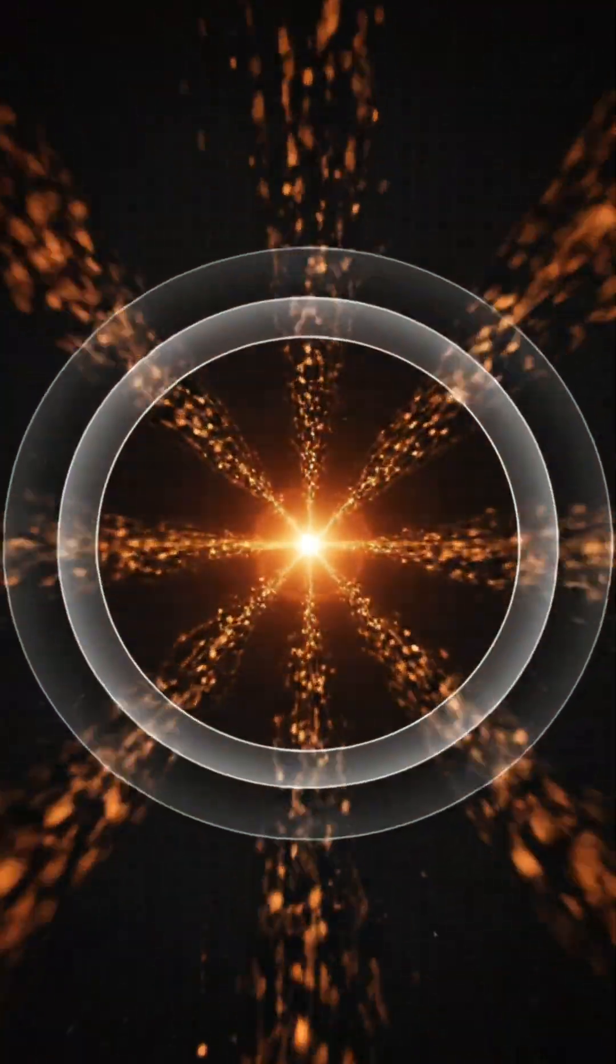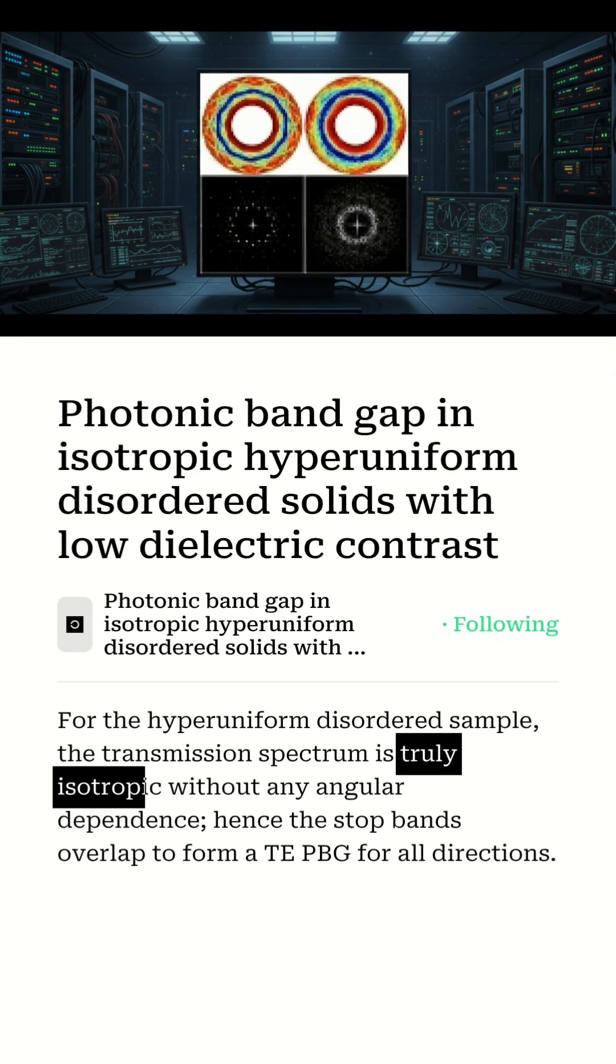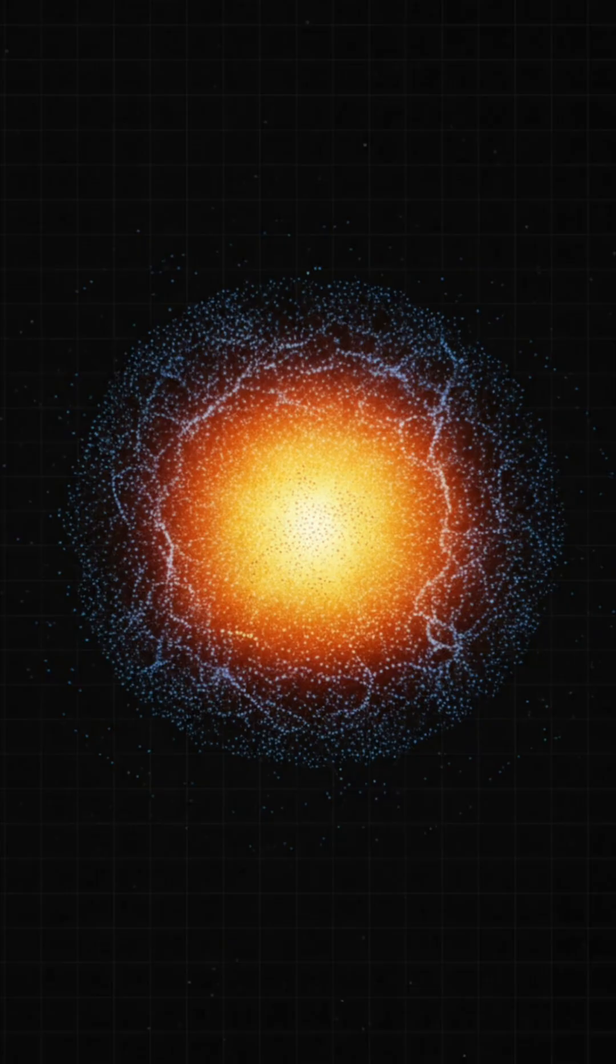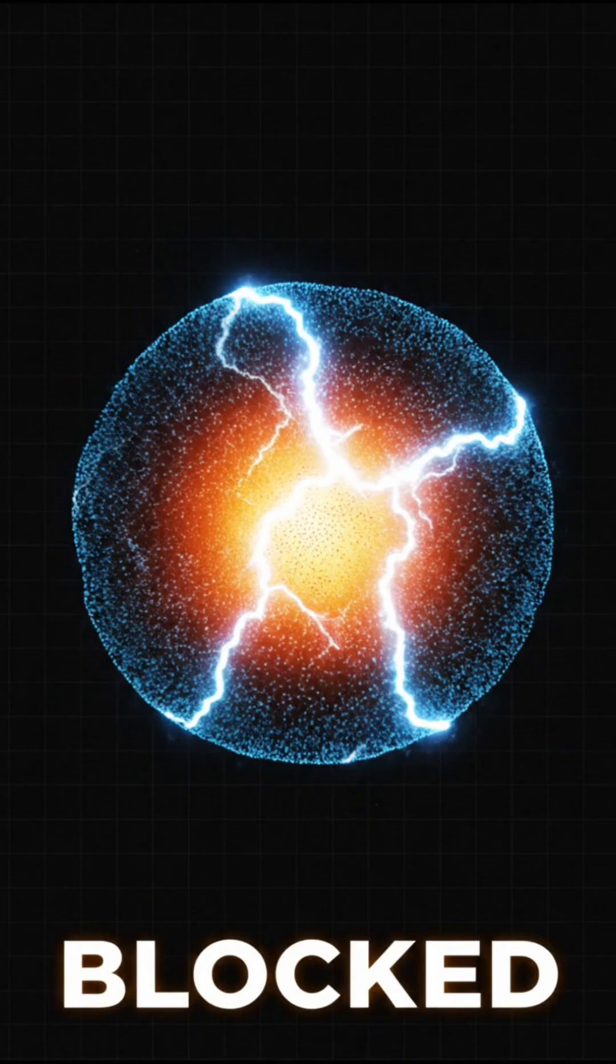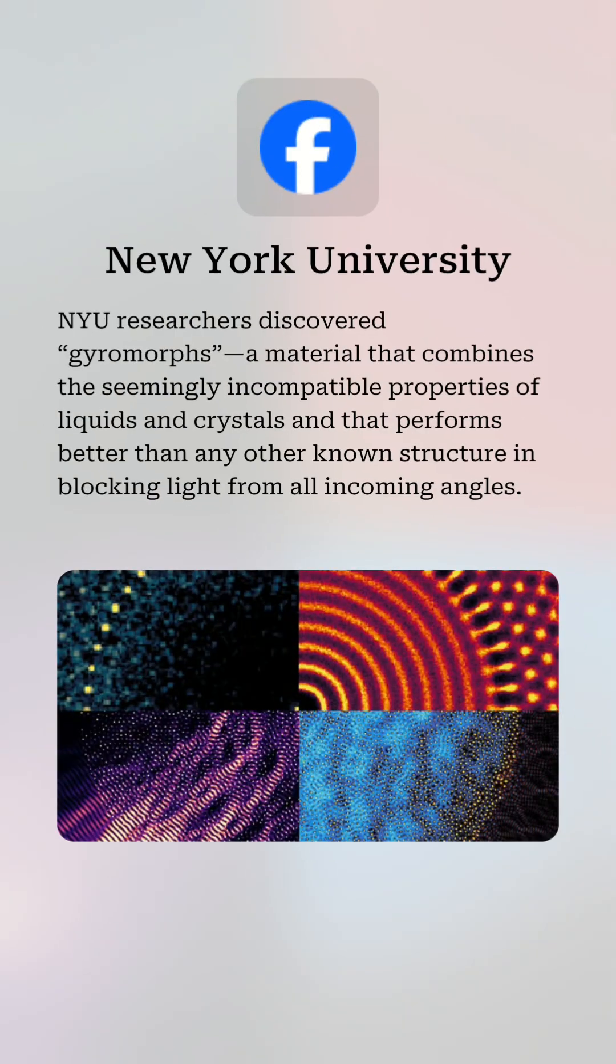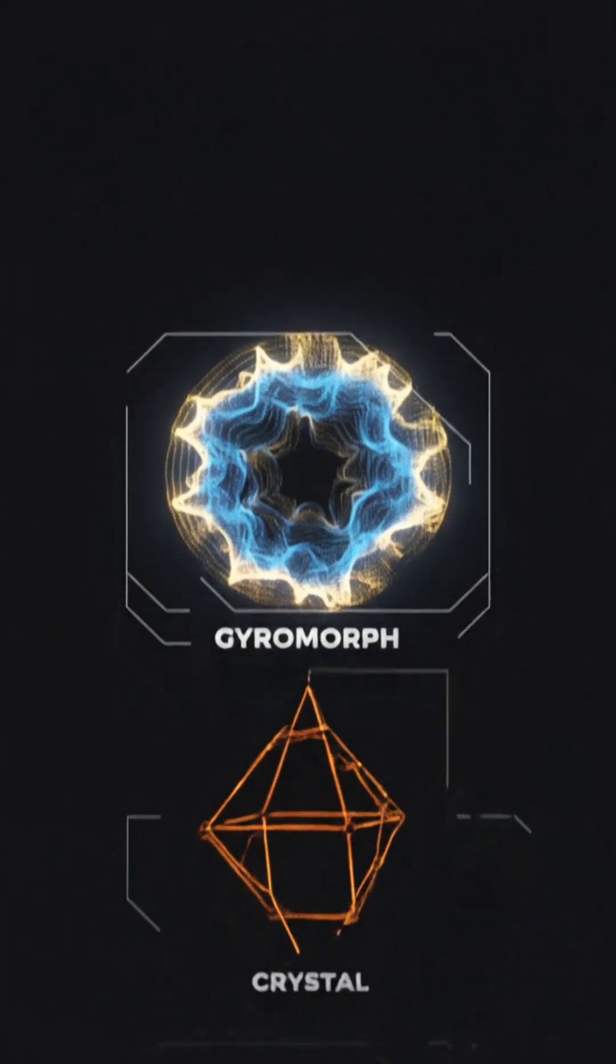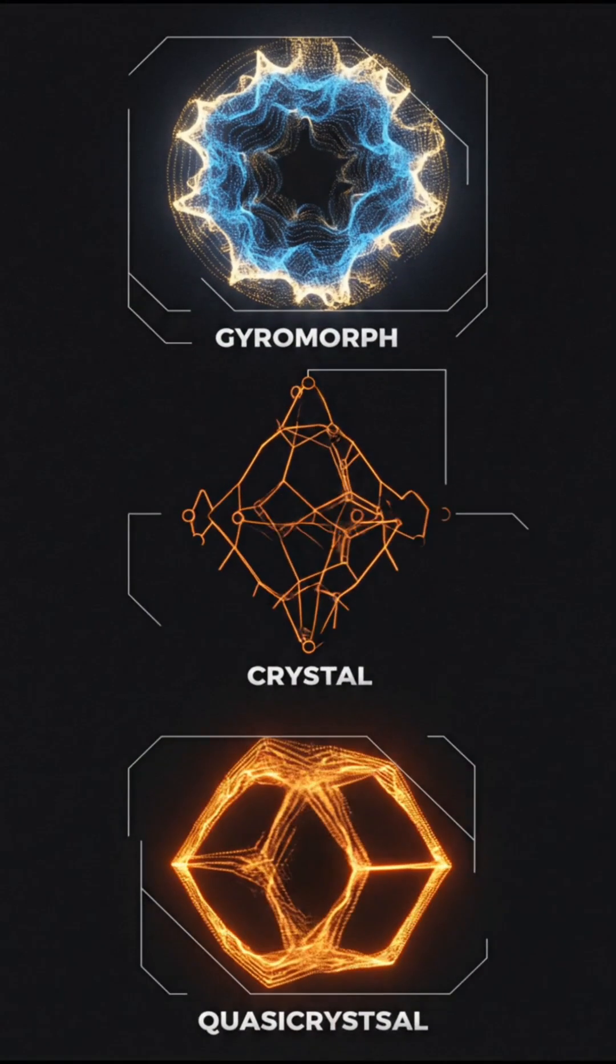This unique design creates what's called a complete isotropic bandgap. That's a fancy way of saying light is blocked from every possible direction. NYU researchers who algorithmically engineered these structures say they outperform all other alternatives, including quasi-crystals.